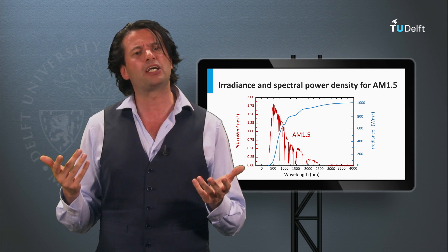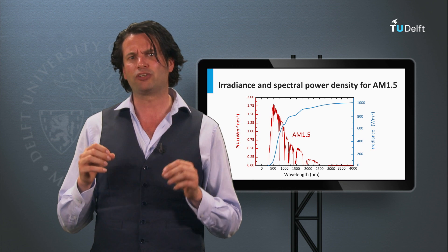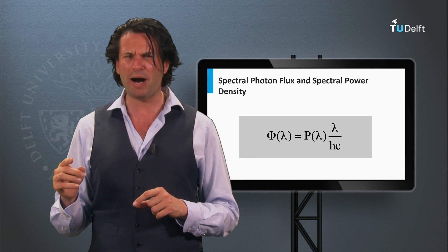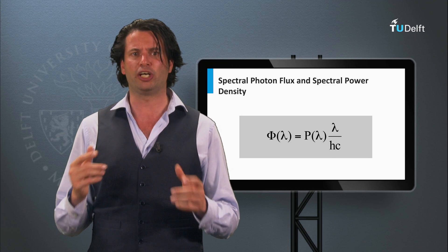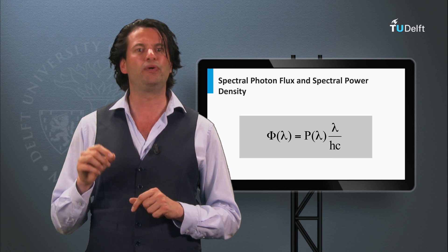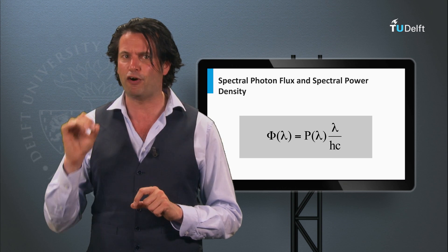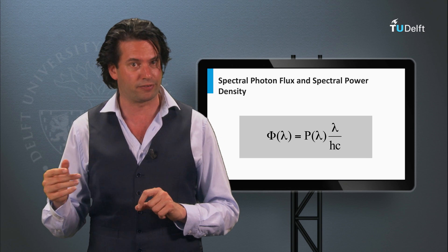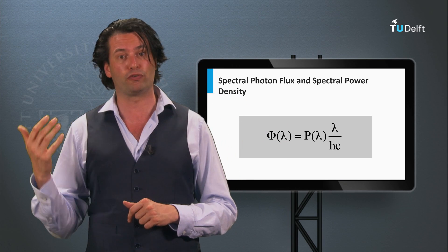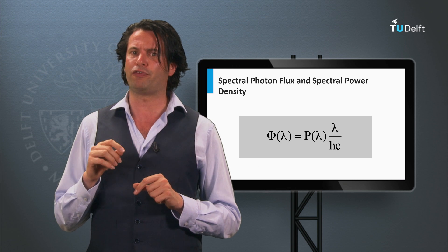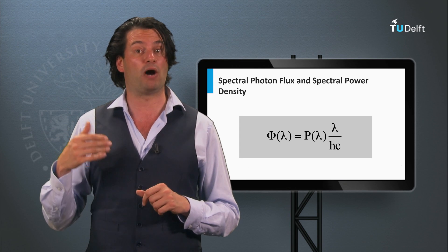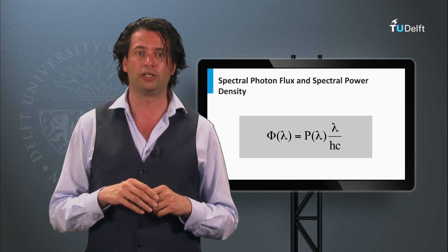The irradiance tells us something about power per unit area. However, we can also consider light as a number of photons. The photon flux phi is the amount of photons per time per area. Similar to irradiance, the photon flux does not contain any spectral information. For that we define the spectral photon flux, which is the amount of photons per unit area, per time, per wavelength range. The relation between the spectral power density and the spectral photon flux requires only the energy of a photon. The spectral photon flux at wavelength lambda is the spectral power density at wavelength lambda divided by the energy of a photon with wavelength lambda.